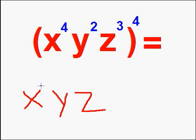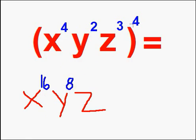4 times 4 is 16, which is our new exponent for the x. 2 times 4 is 8, giving us our new exponent for the y. And 3 times 4 is 12, and that's our new exponent for the z.